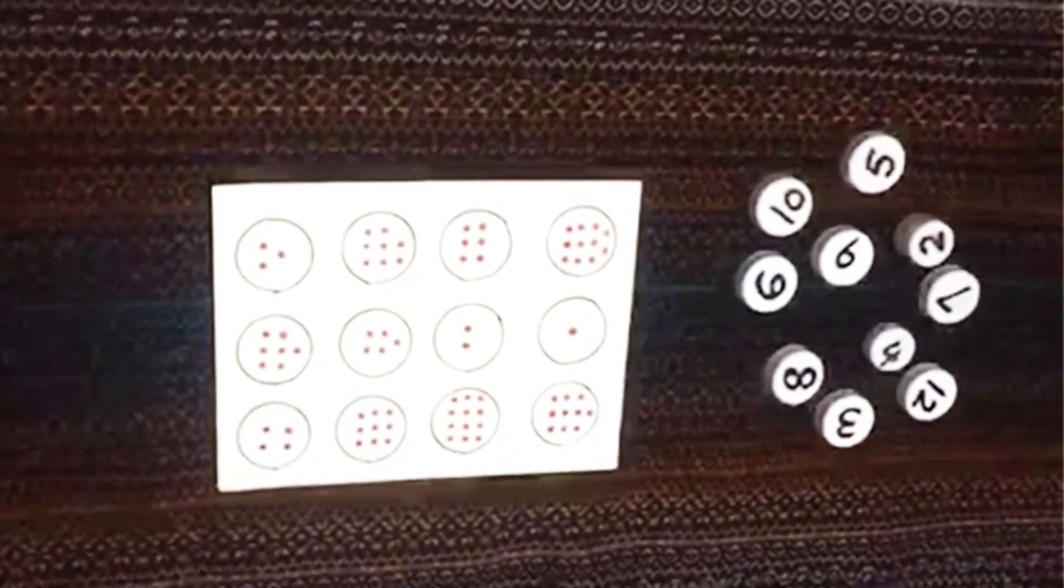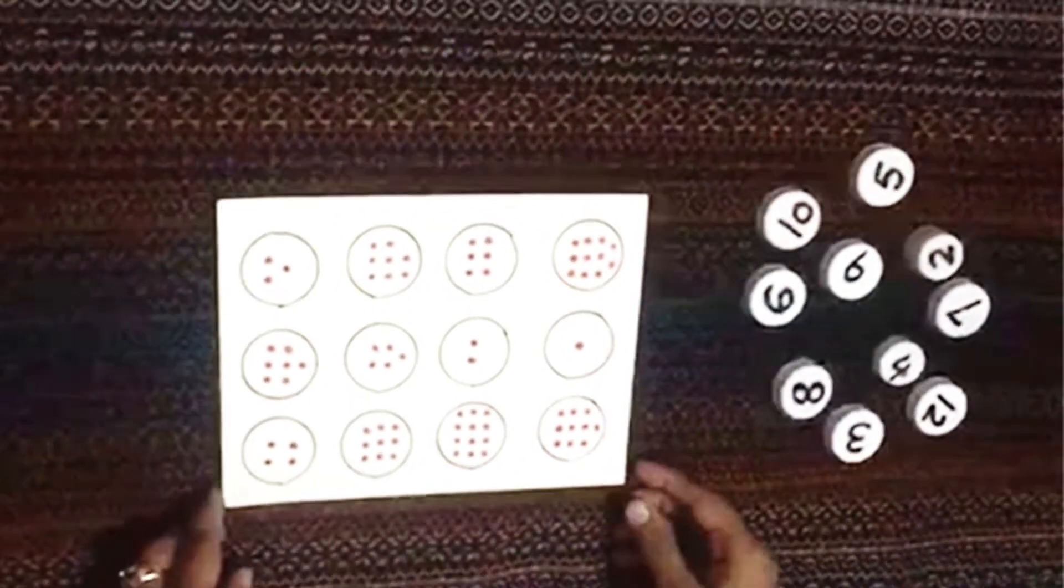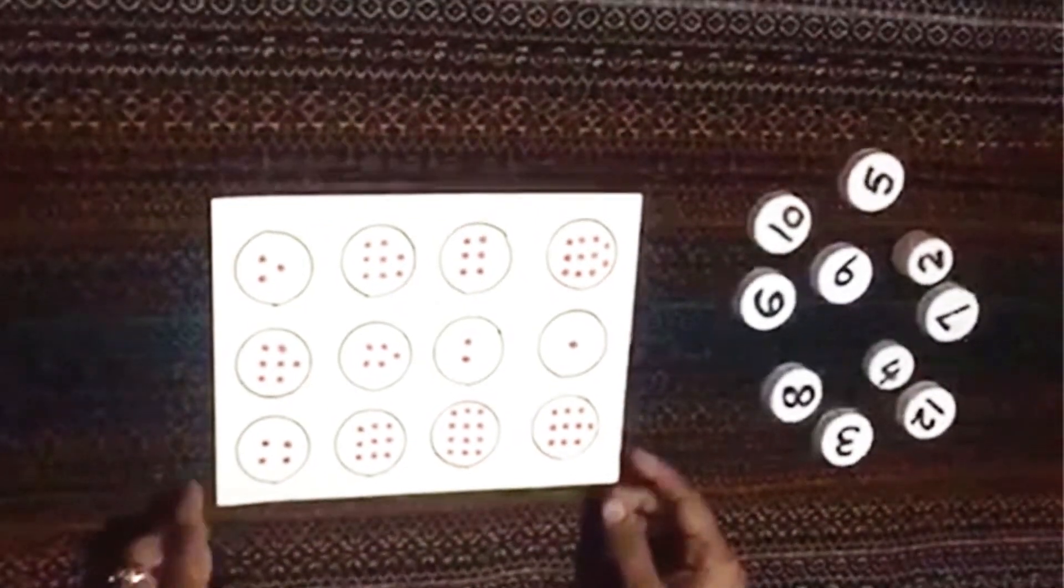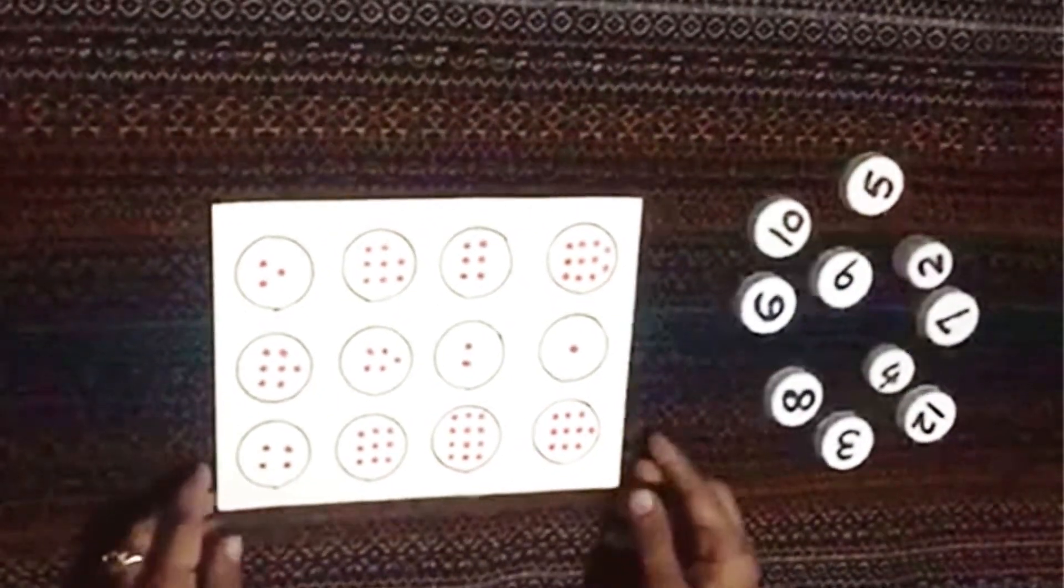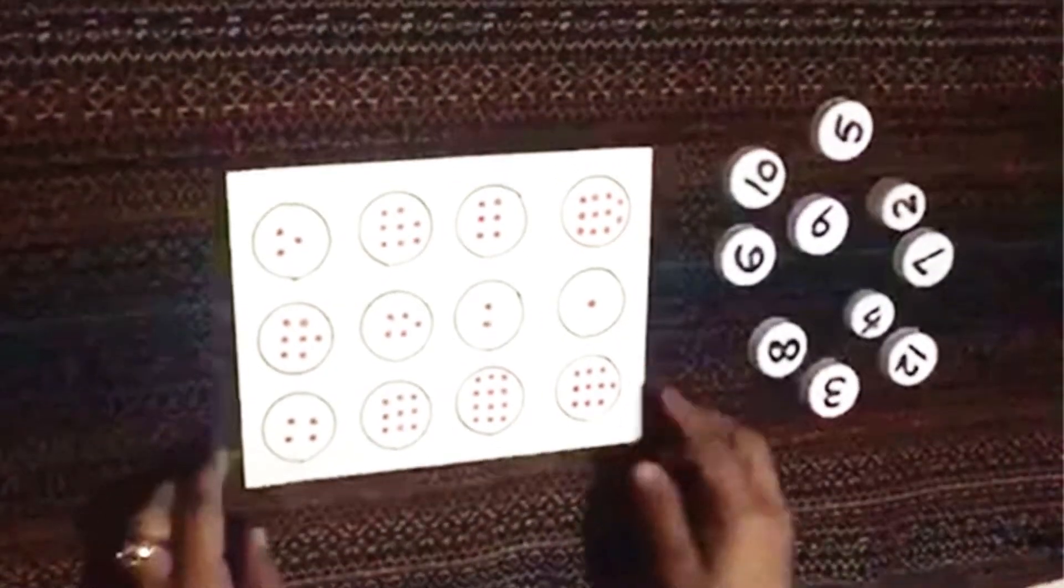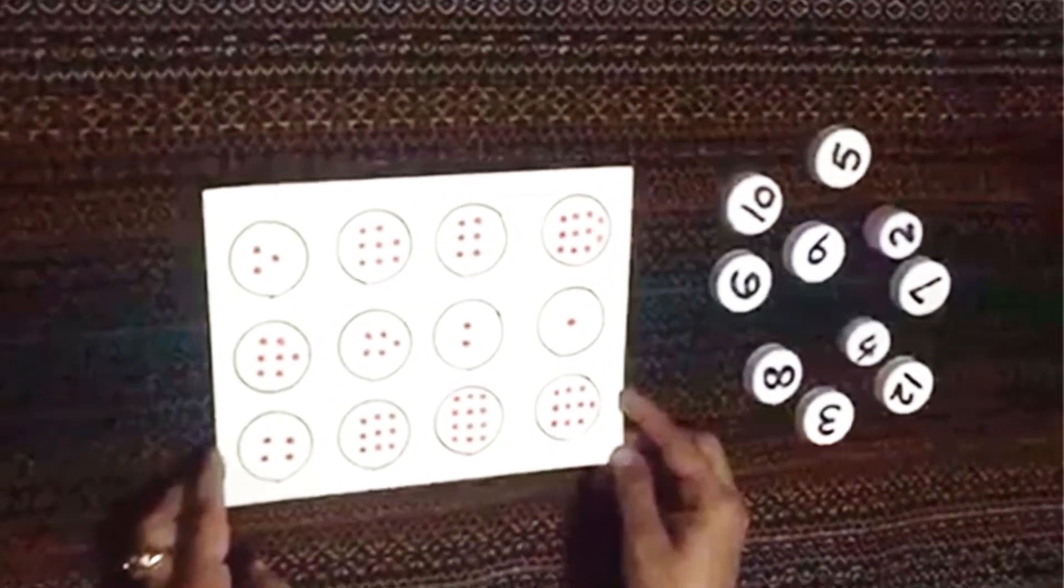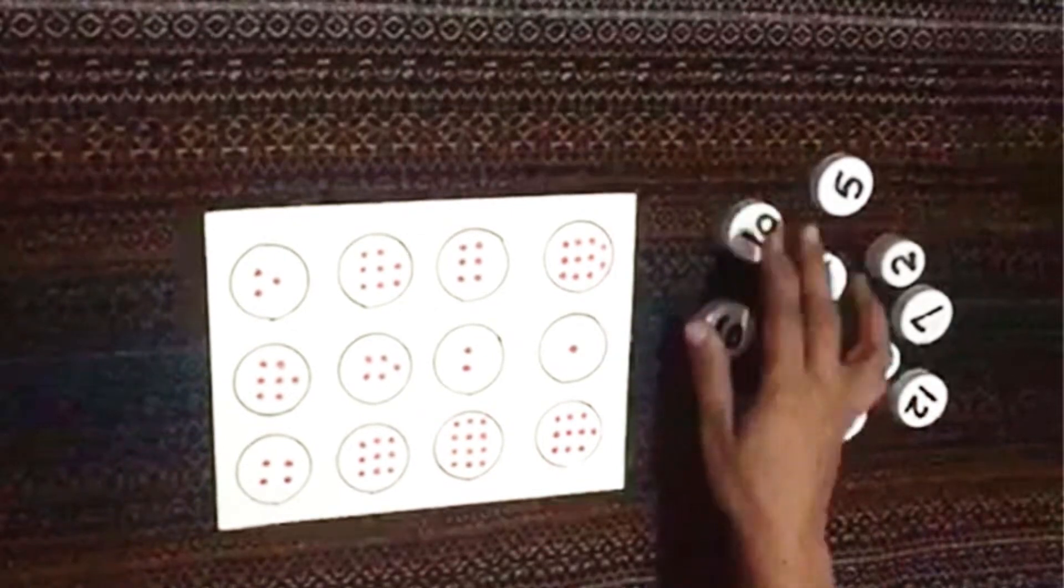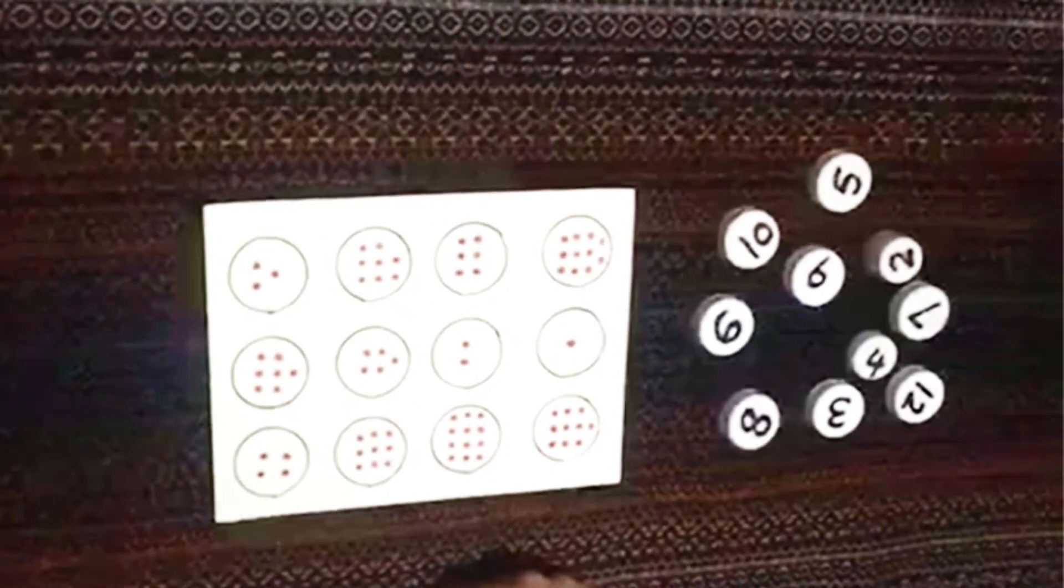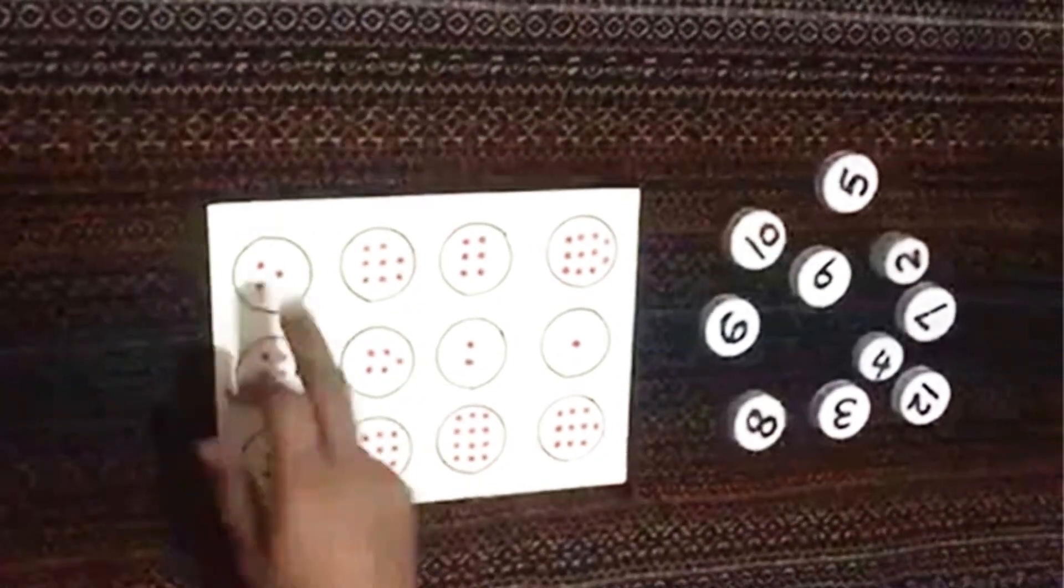This activity helps your child to understand the quantity with numbers. You can make it at home. For this purpose, you make this card and make some counters with numbers. Let your child understand the quantity and count it.